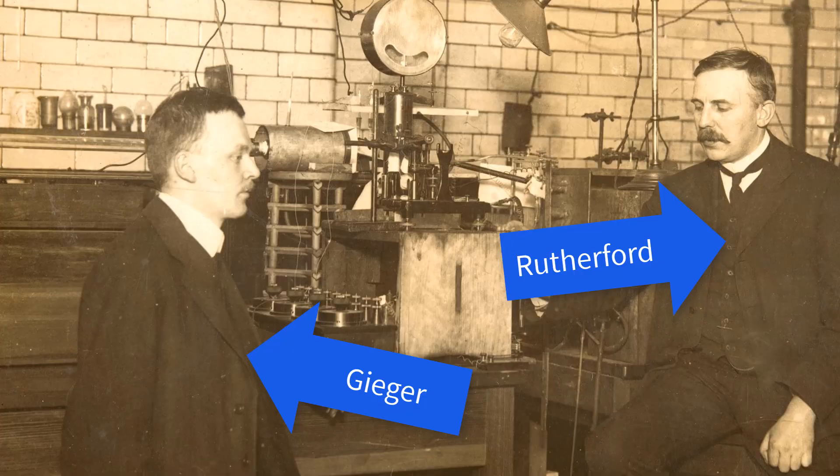Rutherford hated scintillation and left it to the younger and more patient Geiger, writing a friend that, quote, Geiger is a demon at the work of counting scintillation and can count at intervals for a whole night without destroying his equanimity. I damned vigorously and retired after two minutes. There was another problem with scintillation. The doubt, as Rutherford put it, at once arises whether every alpha particle produces a scintillation. Therefore, Rutherford turned to an electric method.